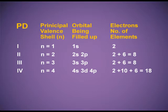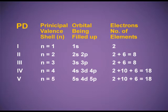Fourth period: n = 4; the orbitals to be filled are 4s, 3d and 4p — 2 electrons in the s orbital, 10 electrons in the 3d orbital and 6 electrons in the p orbital, giving a total of 18 electrons and hence 18 elements in the fourth period. Fifth period: n = 5; orbitals to be filled are 5s, 4d and 5p — again 18 electrons and hence 18 elements in the fifth period.